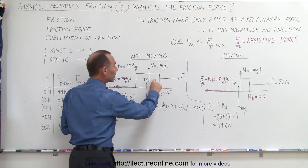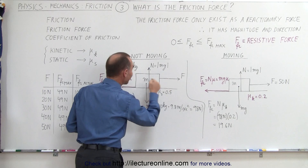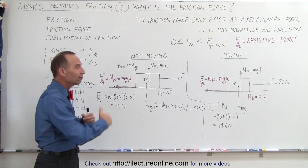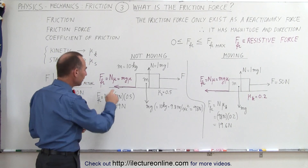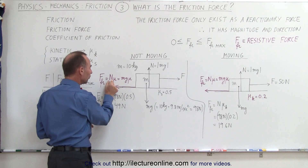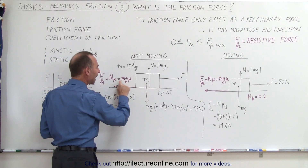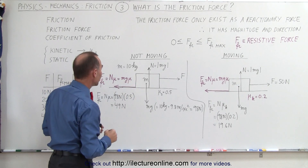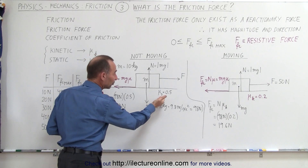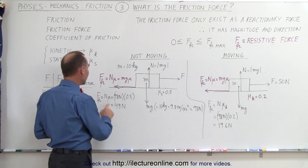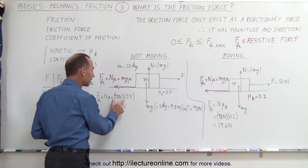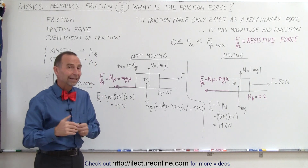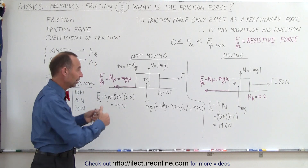So if there was no friction, this force would pull the block to the right, and therefore the friction force acts in the opposite direction. The magnitude of the friction force equals the normal force — in other words, the weight of the object — times the coefficient of friction, represented by the symbol mu. If the static coefficient of friction is 0.5, then we multiply the normal force of 98 newtons times 0.5 to get 49 newtons as the static friction force when the object is not moving.